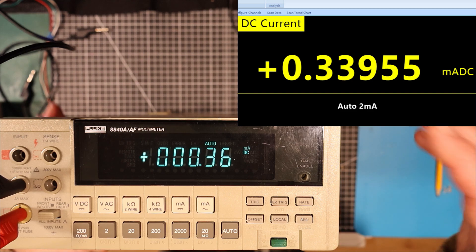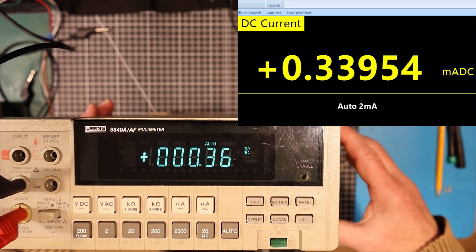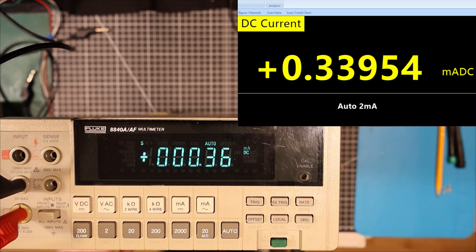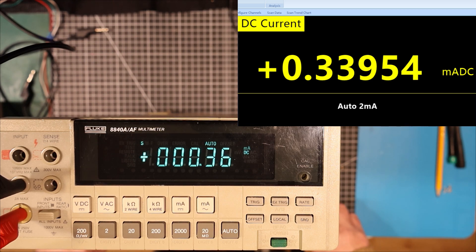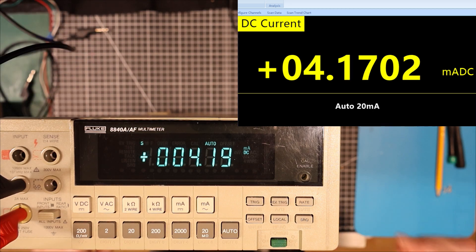So again we can see this doesn't quite have the precision that the Signalent has. And we've got about 360 microamps going through it right now. And the Signalent is measuring 339. So it's off by a couple of counts here. Maybe one and a half counts on this side. So let's bring that up a little bit more. 4.18, 4.19 milliamps. The Signalent is reading 4.17. So again we're off by one count thereabouts. Pretty accurate.